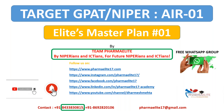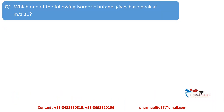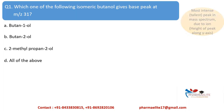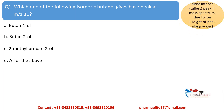So let us start with the MCQs. The first question is: which of the following isomeric butanol gives a base peak at m/z 31? The options are butane-1-ol, butane-2-ol, 2-methylpropan-2-ol, and all of the above. This question is from mass spectrometry. Base peak means the most intense peak — that is, the tallest peak in the mass spectrum due to ions. It is the height of the peak along the y-axis.